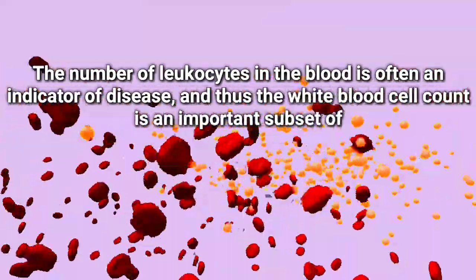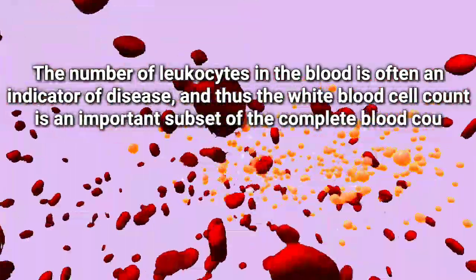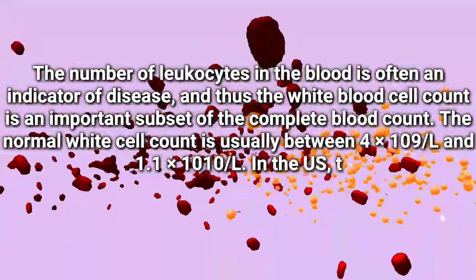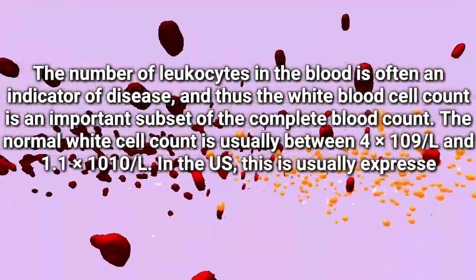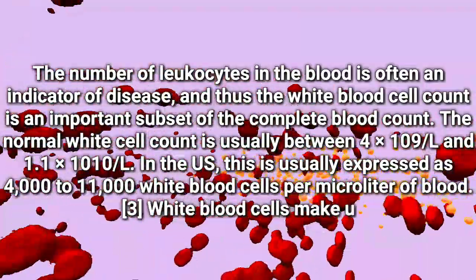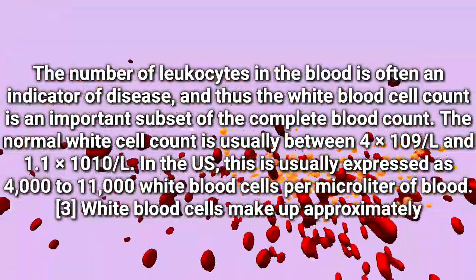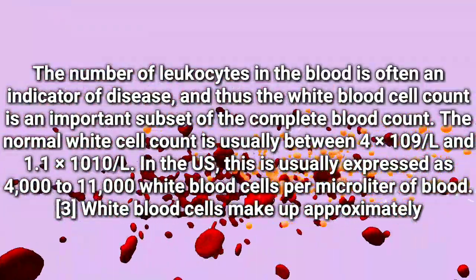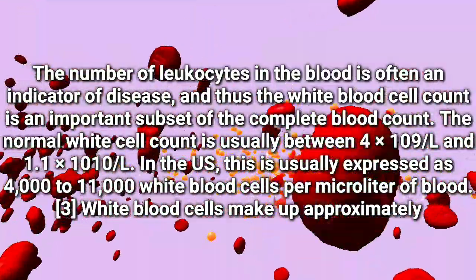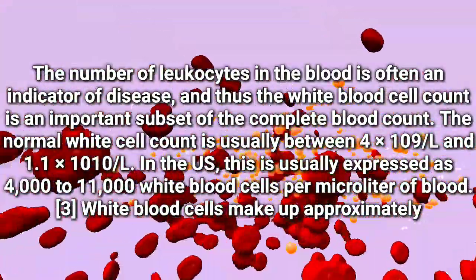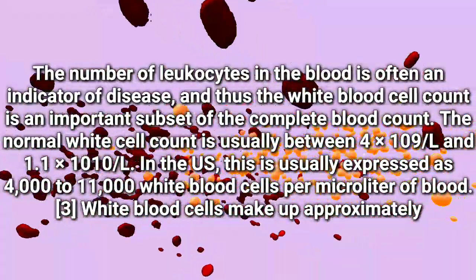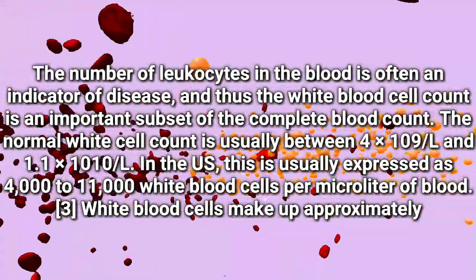The white blood cell count is an important subset of the complete blood count. The normal white blood cell count is usually between 4 × 10⁹ per liter and 1.1 × 10¹⁰ per liter. In the US, this is usually expressed as 4,000 to 11,000 white blood cells per microliter of blood.